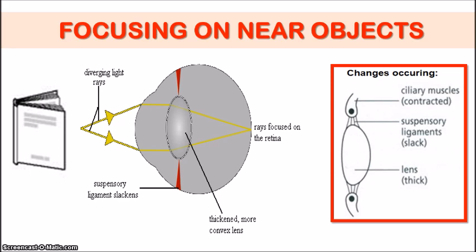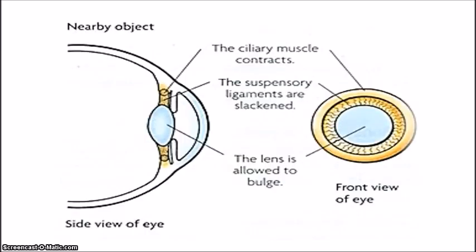So that is focusing on near objects. Let's look at this other diagram here, which shows another view of the eye and the changes that occur with those parts of the eye involved in accommodation. You're seeing here the ciliary muscle — remember, these are going to contract when you're looking at a nearby object. As they contract, the suspensory ligaments slacken and loosen up, and this causes the lens to get fatter or bulge. This is showing you the front view and the side view of the eye so you have a better understanding of what is going on.